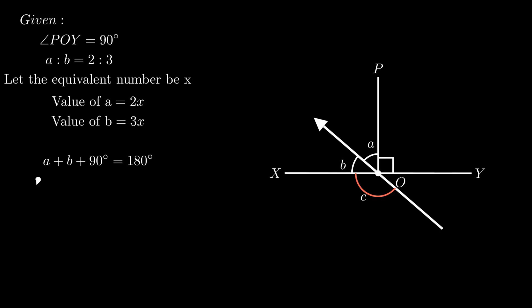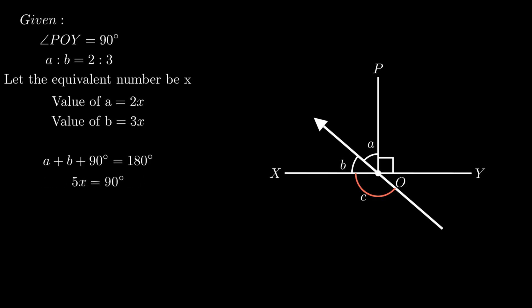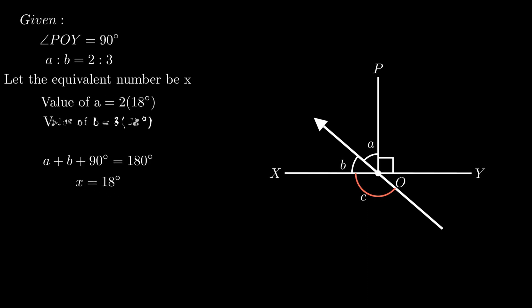On putting the values of angle a and b as 2x and 3x, we get 2x plus 3x equals 180 minus 90 degrees, which gives 5x equals 90 degrees. On transposing, we get x equals 90 divided by 5, which is simplified as 18 degrees. Putting the value of x as 18, we get the value of a as 36 degrees and the value of b as 54 degrees.